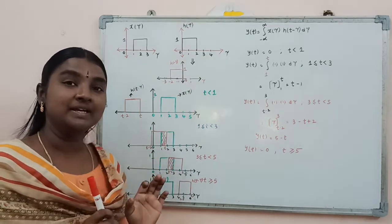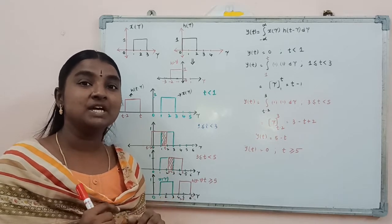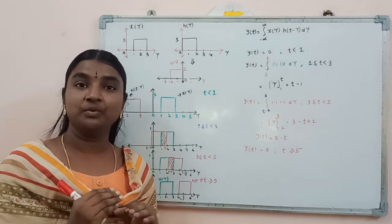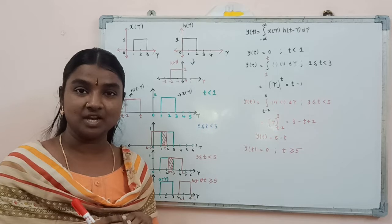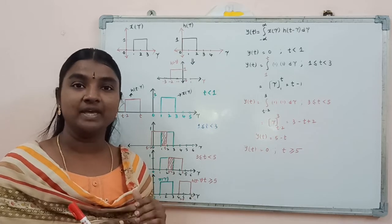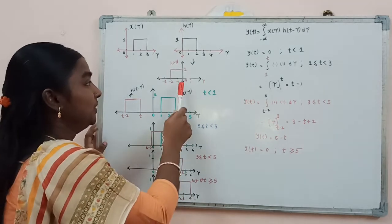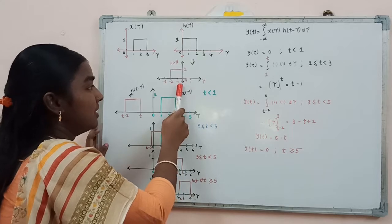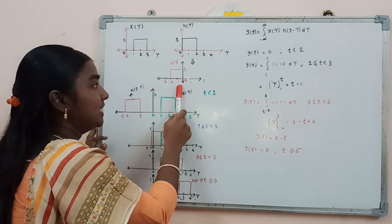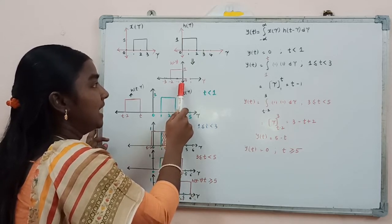In the next step, we need to find the h(-τ) signal. By doing a time reversal operation, we may find h(-τ). This is the h(-τ) signal obtained after applying the time reversal operation.